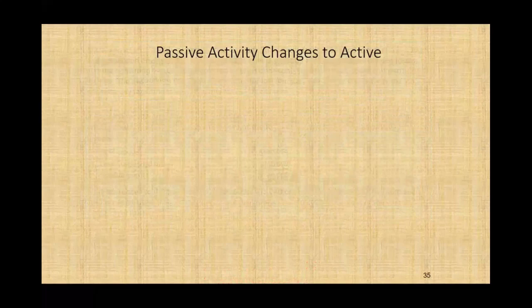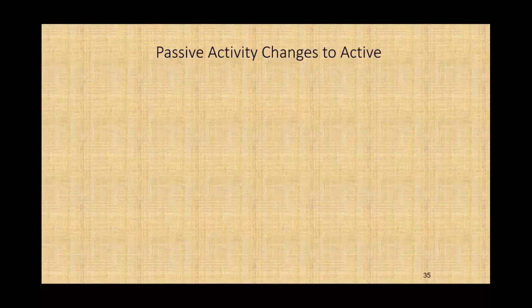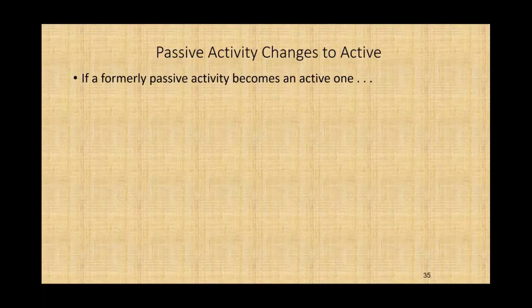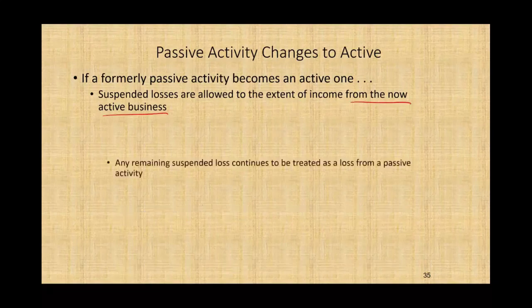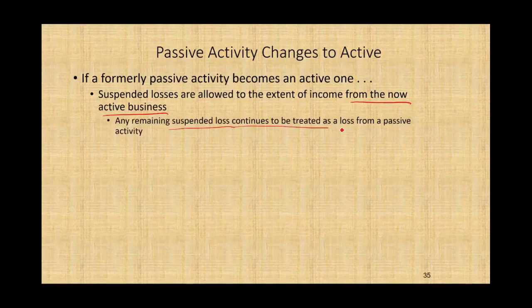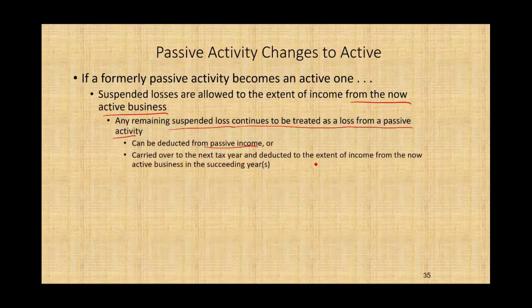If a formerly passive activity becomes an active one — because the taxpayer is now materially participating — suspended losses are allowed to the extent of income from the now-active business. Any remaining suspended losses continue to be treated as passive activity losses and can be carried over to succeeding years to be deducted against income from the now-active business.